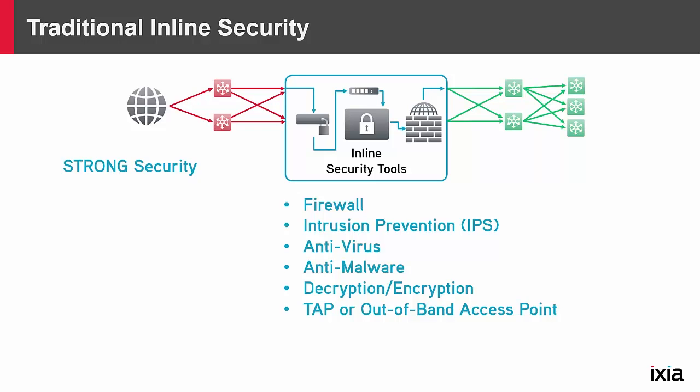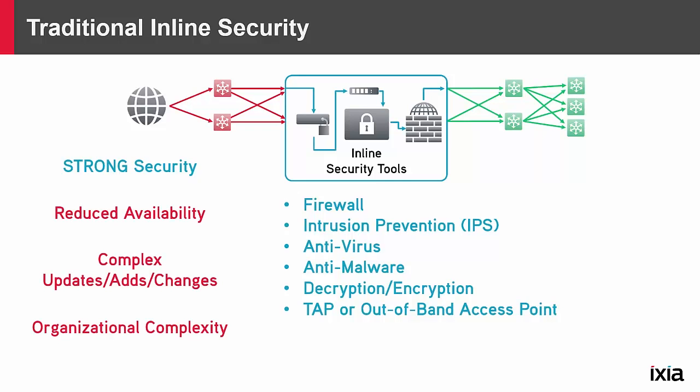While the security in these architectures is very strong, there are some challenges with them as well. They bring reduced availability in that many of these devices are introducing points of failure all in line against each other. They bring complexity in updates, adds, and changes so that any change involves managing multiple teams to align on a network outage window. And that drives organizational complexity, often between a network operations team and a network security team, which are trying to maximize both availability and security.